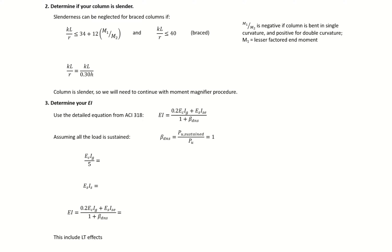The first thing we need to do is determine if our column is slender. We can do that using our ACI limits and our KL over R slenderness ratio. We can start by solving for our limits.